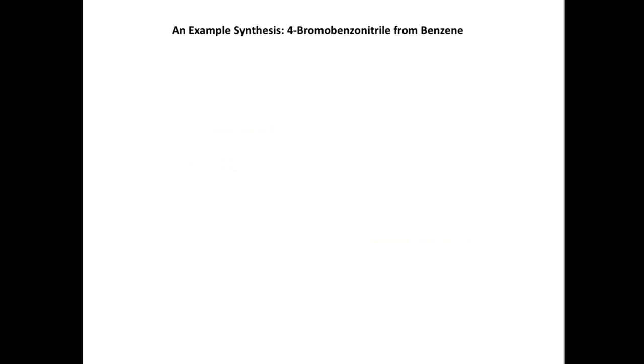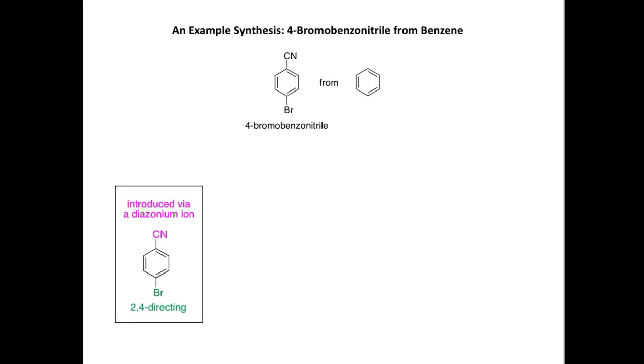We're going to look at a couple of examples now. In the first example, we're going to look at the synthesis of 4-bromobenzonitrile from benzene. Here are the two structures. Here's 4-bromobenzonitrile, my target molecule, and here's my starting material, benzene. In the synthesis of this compound, we need to consider two key things.